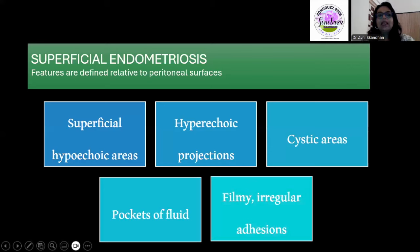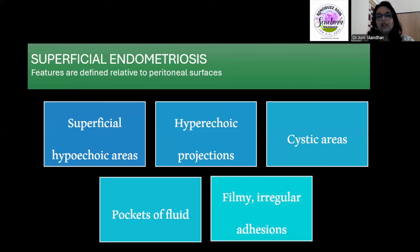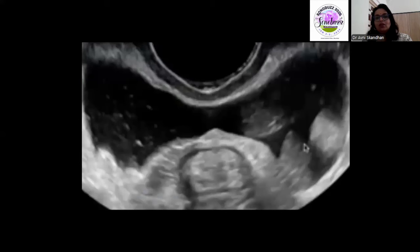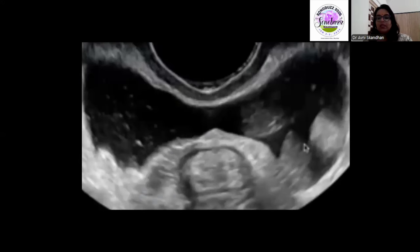Coming to superficial endometriosis — it is extremely difficult to appreciate. In this scenario, fluid is a very good friend because if there is fluid, there is a chance we might pick it up; otherwise it is near impossible. You can see it as superficial hyperechoic areas, small hyperechoic projections, cystic areas, pockets of fluid in the peritoneal layer, or filmy adhesions. Because fluid is such a good medium, there is a system called podography where saline infusion is instilled into the pouch of Douglas, providing a medium through which superficial endometriotic deposits can be seen.